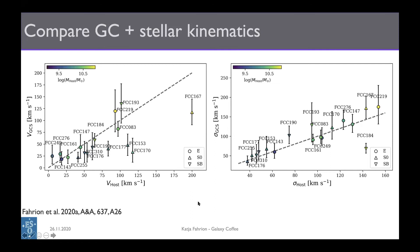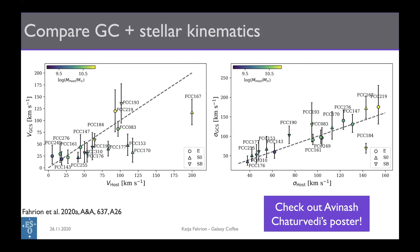If we look at the rotation velocity, the picture is more diverse. We have some galaxies where the globular clusters trace what is happening in the stars, but also galaxies — edge-on S0 galaxies — where the host velocity is very strongly boosted by seeing the disk edge-on, and this is not captured by the globular clusters.